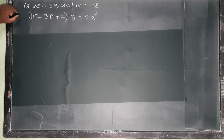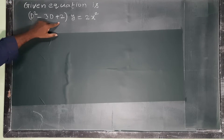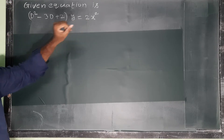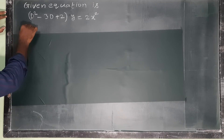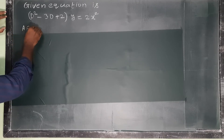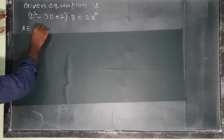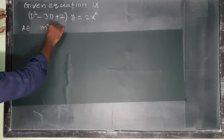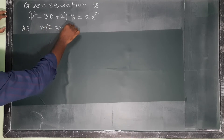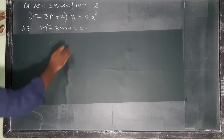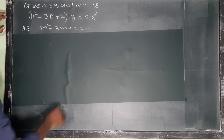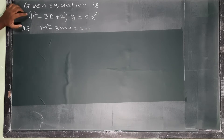Given equation: (D² - 3D + 2)y = 2x². The auxiliary equation (AE) is m² - 3m + 2 = 0. This is the auxiliary equation for this differential equation.